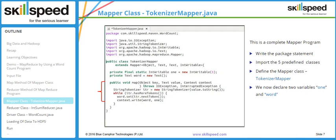Arrow number five explains the map method implementation. The map method reads input data line by line via the value parameter, then breaks the data into tokens using StringTokenizer. The reference variable 'itr' holds the address of each token. The while loop checks 'itr.hasMoreTokens()' returning a boolean. Inside the loop, 'word.set(itr.nextToken())' sets each token on the word variable — for example, 'John' would be set on the word variable.